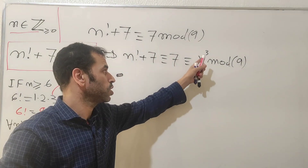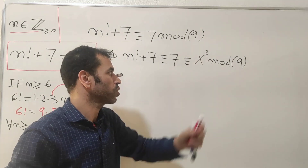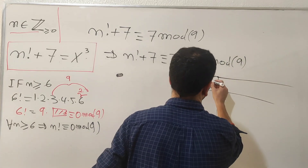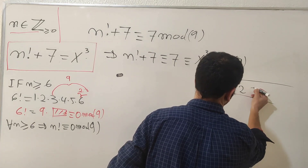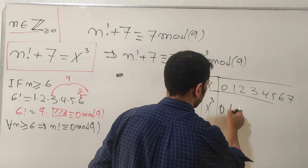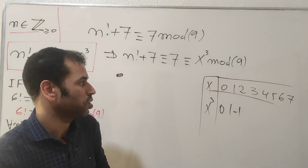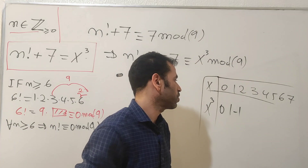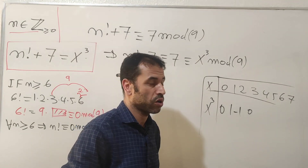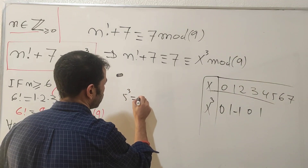Now we need to check the possible values of x cubed reduced mod nine. Using the following chart with values x = 0, 1, 2, 3, 4, ...: zero cubed is zero; one cubed is one; two cubed is eight, which is the same as minus one mod nine since eight is one less than nine; three cubed is 27, which is zero mod nine since nine divides 27; four cubed is 64, which is one more than 63, giving remainder one.